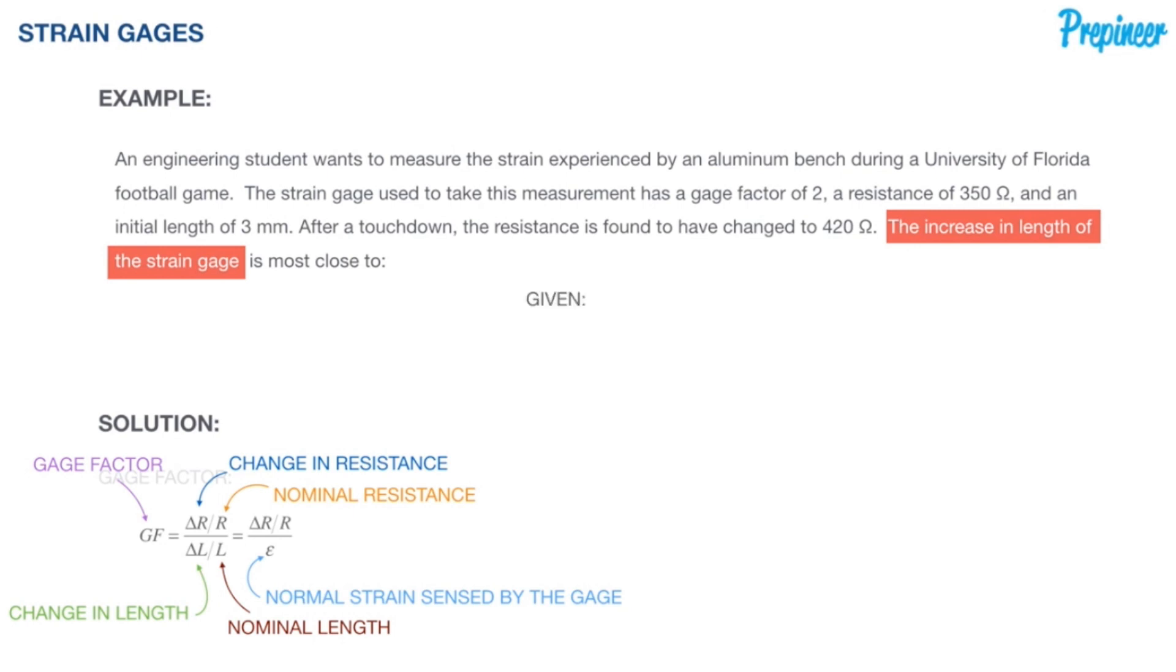What are we given? The gauge factor is 2, the nominal resistance is 350 ohms, the nominal length is 3 millimeters, and the final resistance is 420 ohms. Here's our standard formula. We have everything we need to put into this formula to determine what the increase in length is. We want to know what delta L is and we have everything we need.